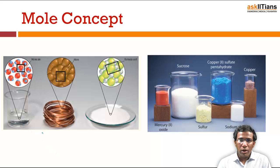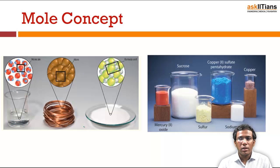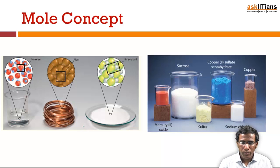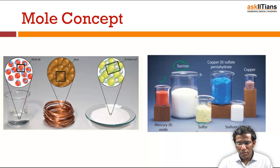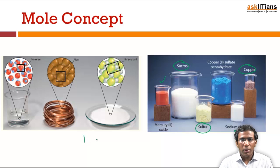Whether it is a compound, an element, or an ionic compound — whether solid, liquid, or gas — it is immaterial. One mole of any compound contains Avogadro's number of particles. Examples include mercury oxide, sucrose (a covalent compound), sulfur (an element), sodium chloride (an ionic compound), and copper (an element).